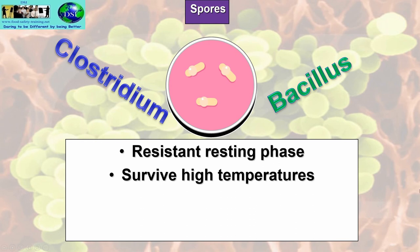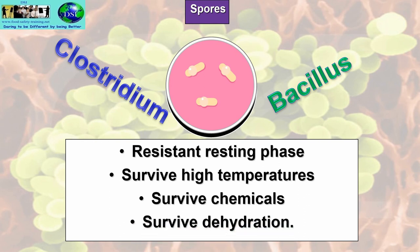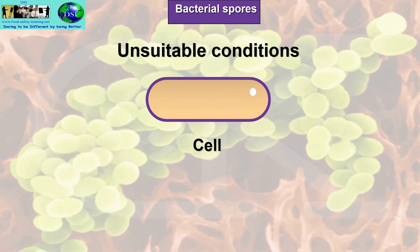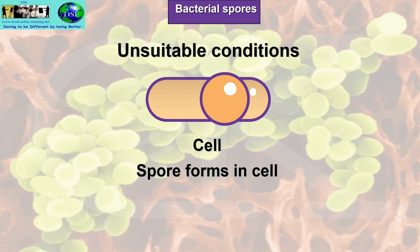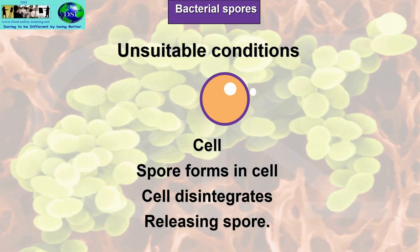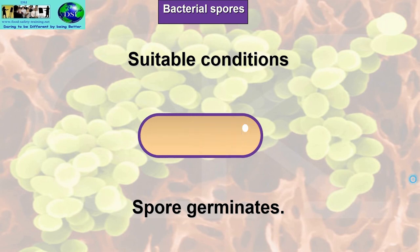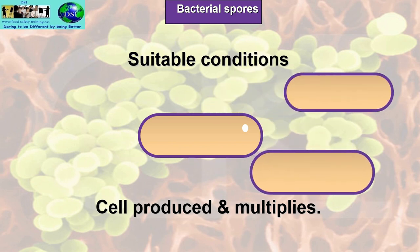Spores can survive very high temperatures — up to 2,500°C such as a rocket taking off — and minus 200°C from liquid nitrogen. They can survive chemicals such as disinfectants. Under unsuitable conditions, a spore forms in the bacterial cell and starts to develop in earnest. The cell disintegrates, releasing the spore. Under suitable conditions, the spore germinates and turns back into a bacterial cell, which will then multiply.